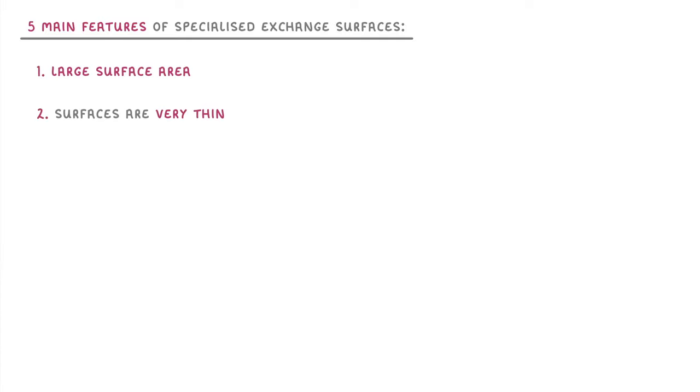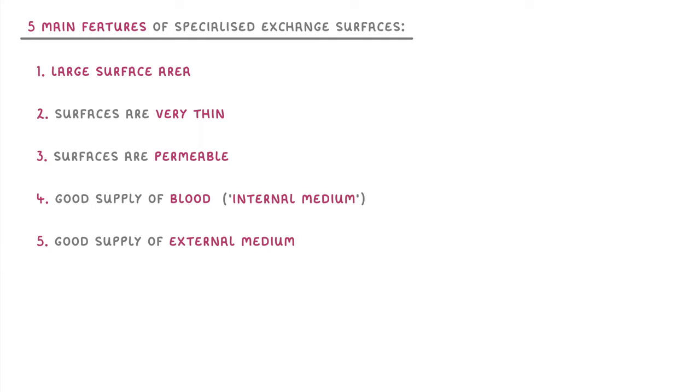So to quickly recap, the five main features of specialized exchange surfaces are: they have a large surface area, the surfaces are very thin, the surfaces are permeable to whichever substances they need to exchange, there's a good supply of blood—which is sometimes called a good supply of internal medium—and there's a good supply of the external medium, for example, the air.